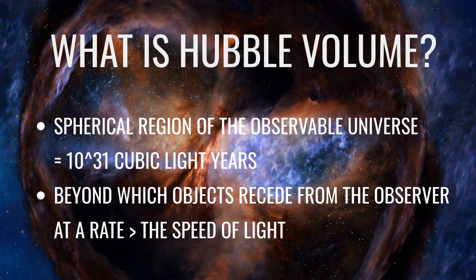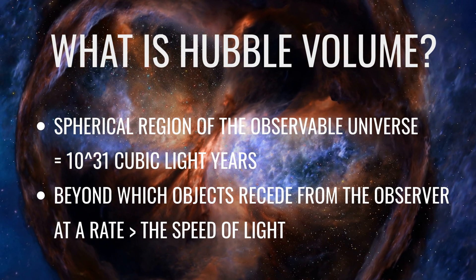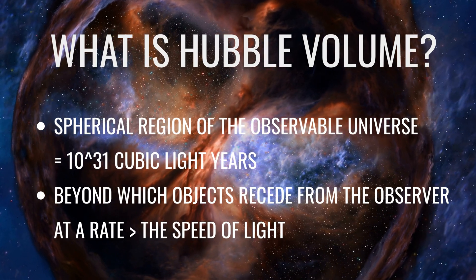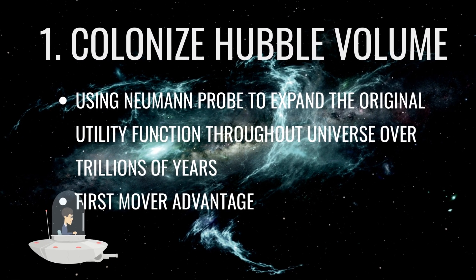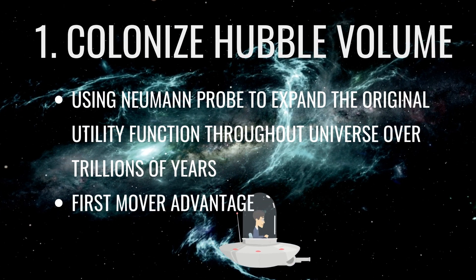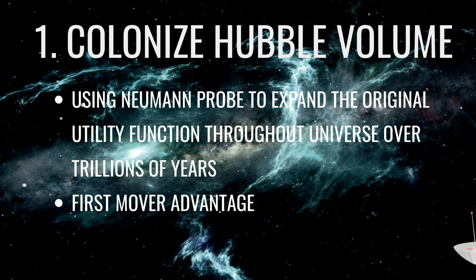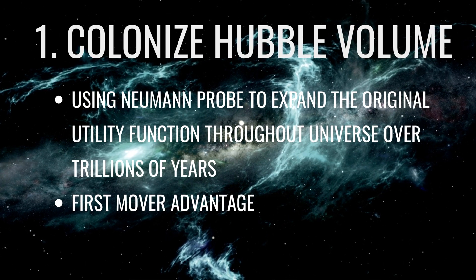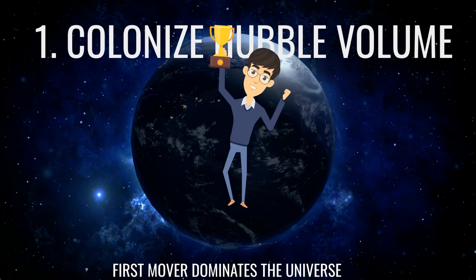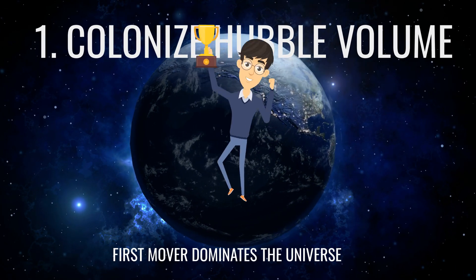The Hubble volume is the maximum reach of influence for any intelligence in the observable universe, because anything beyond that is receding at a rate greater than the speed of light. One method to colonize the Hubble volume is to use a Newman probe — a device that is able to mine the material it needs to replicate itself throughout the universe. A superintelligence can embed its original utility function within its Newman probe, so that its utility function would be maximized as it spans the universe through trillions of years. In this scenario, an ambitious intelligence with a first-mover advantage will dominate the universe.